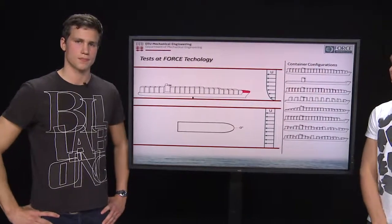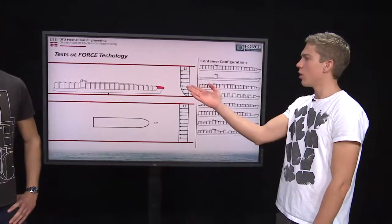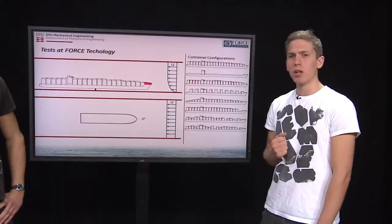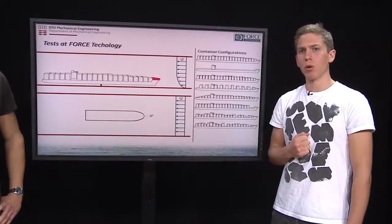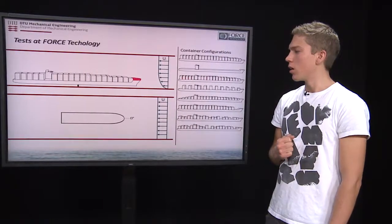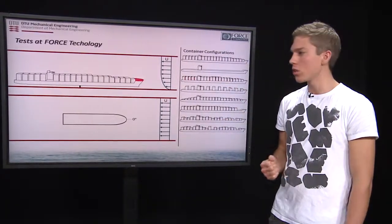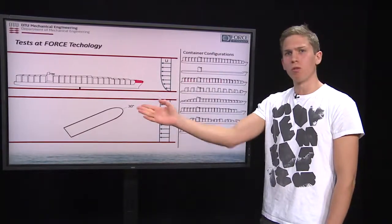We did further experiments at Force Technology using a non-uniform flow profile, which was a boundary layer profile. We did this on four different constructions for the bow of the ship in combination with eight different container configurations and flow angles varying from zero to 40 degrees.